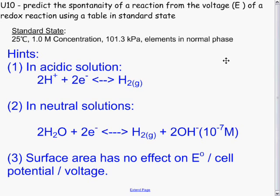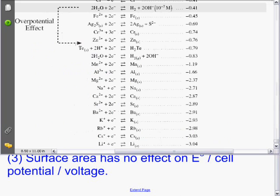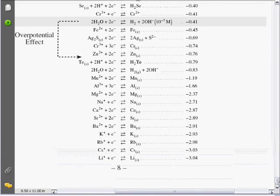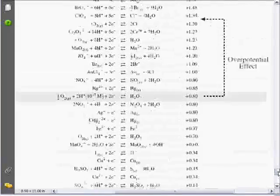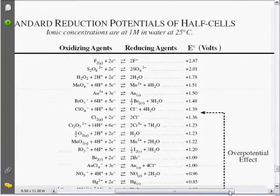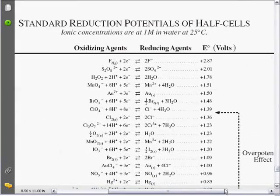First a reminder that standard state is 25 degrees Celsius, 1.0 molar concentration, 101.3 kilopascals, elements in normal phase. If you forget some of that, your table of standard states has a lot of that up at the top. Standard reduction potentials of half cells, ion concentrations are in 1 molar in water at 25 degrees Celsius.